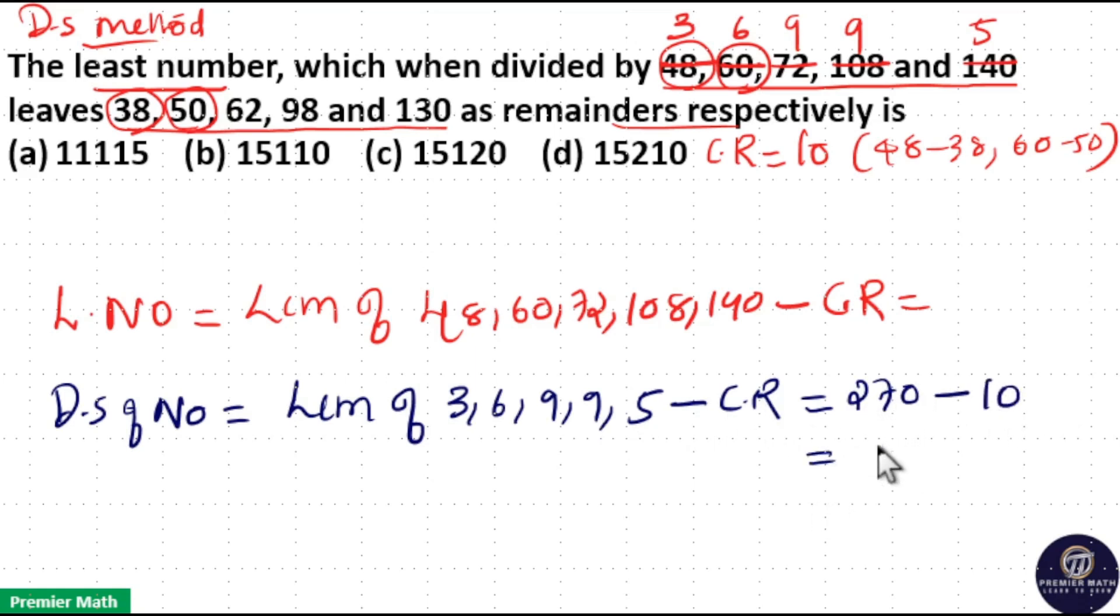Now you can see here 2 plus 7 equals 9 is digital sum. And here 1 plus 0 equals 1 is digital sum, which means here 8 should be digital sum. So check for the option. Here 5 plus 4 equals 9 is digital sum. 6 plus 2 equals 8 is digital sum.